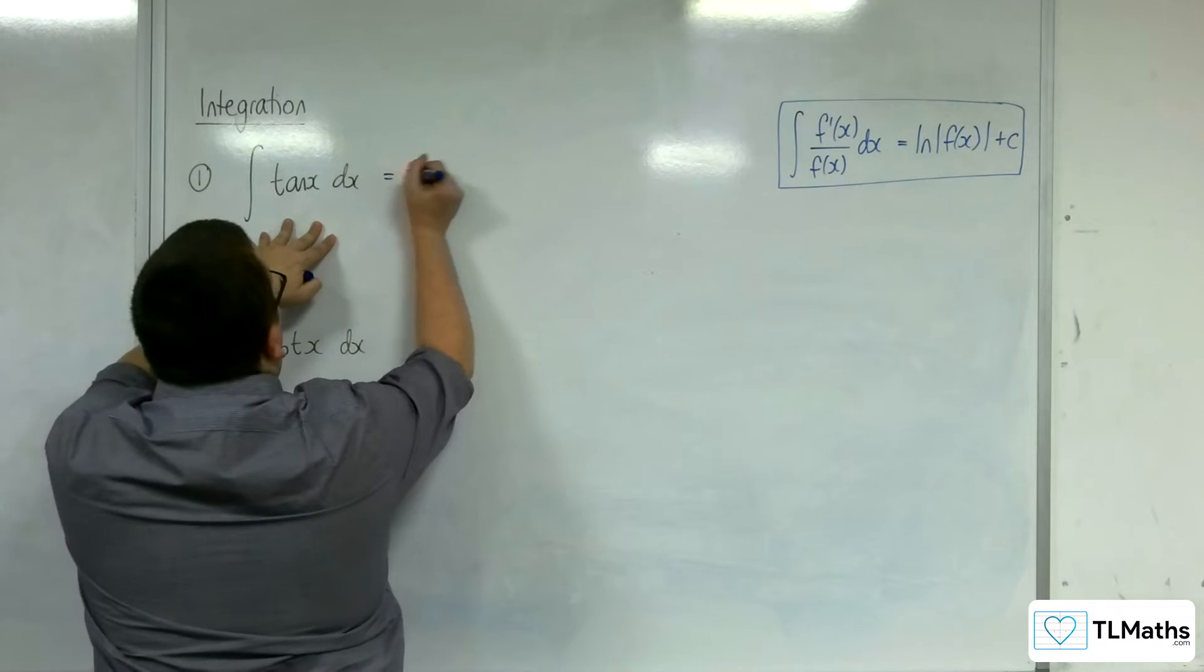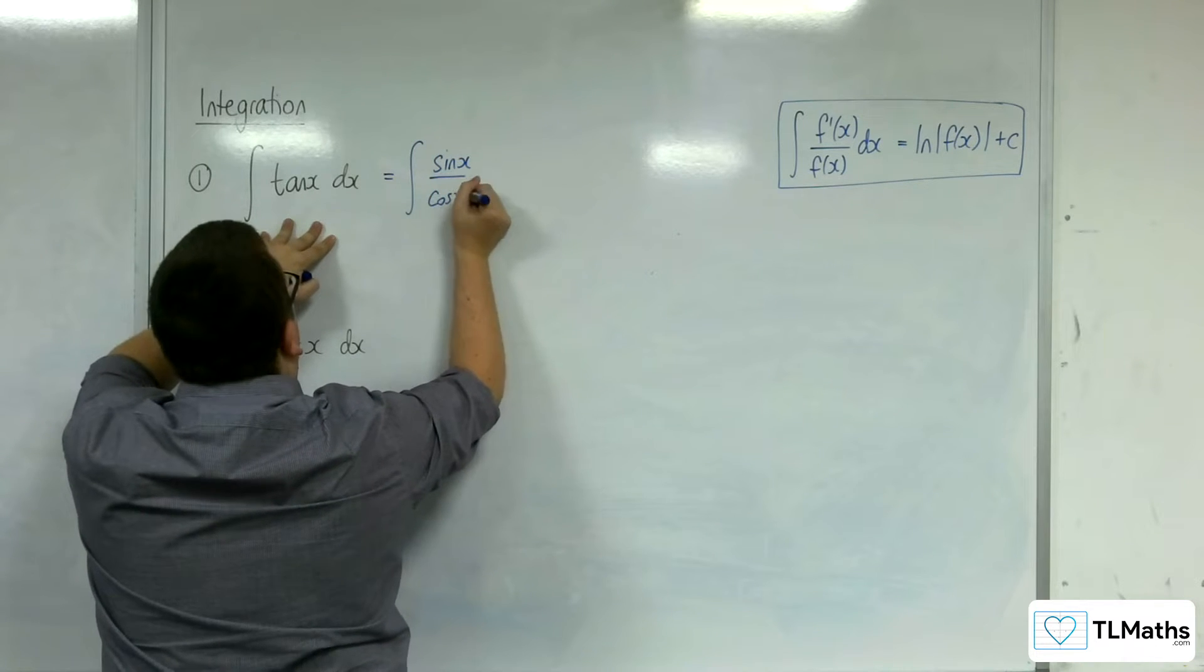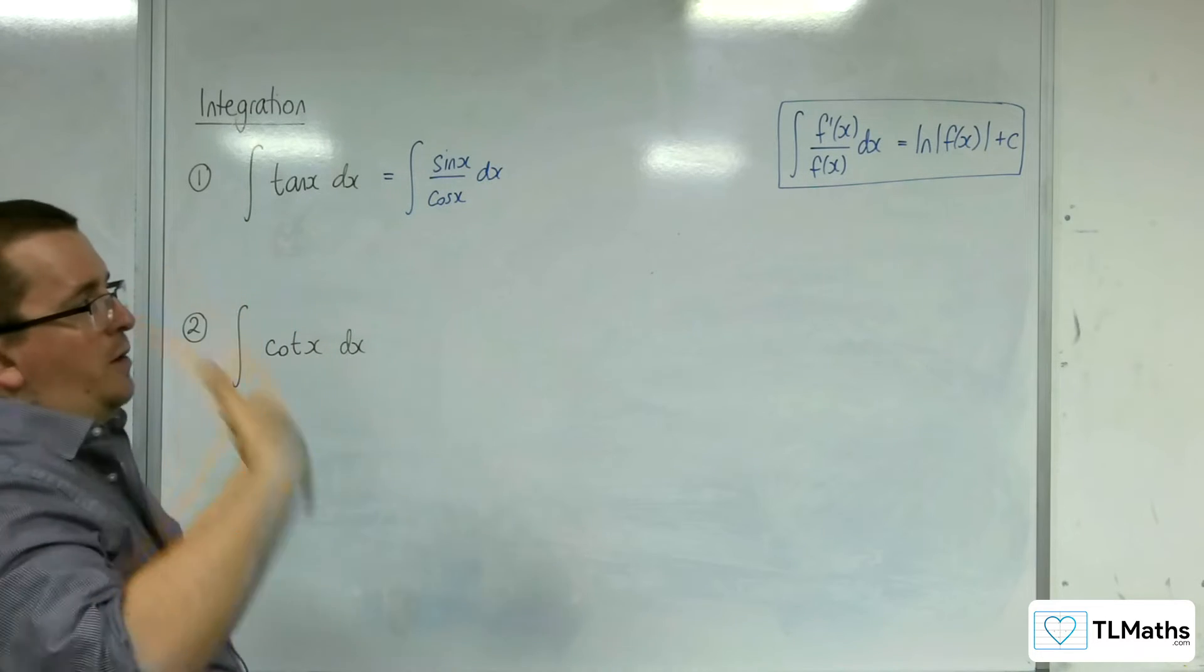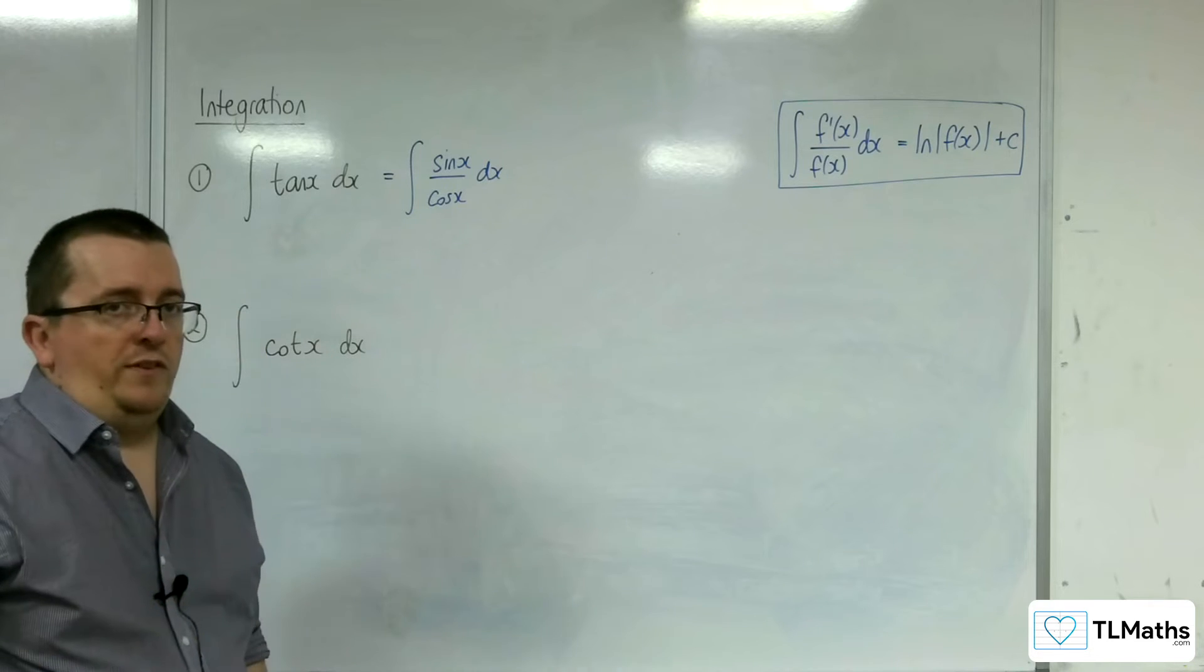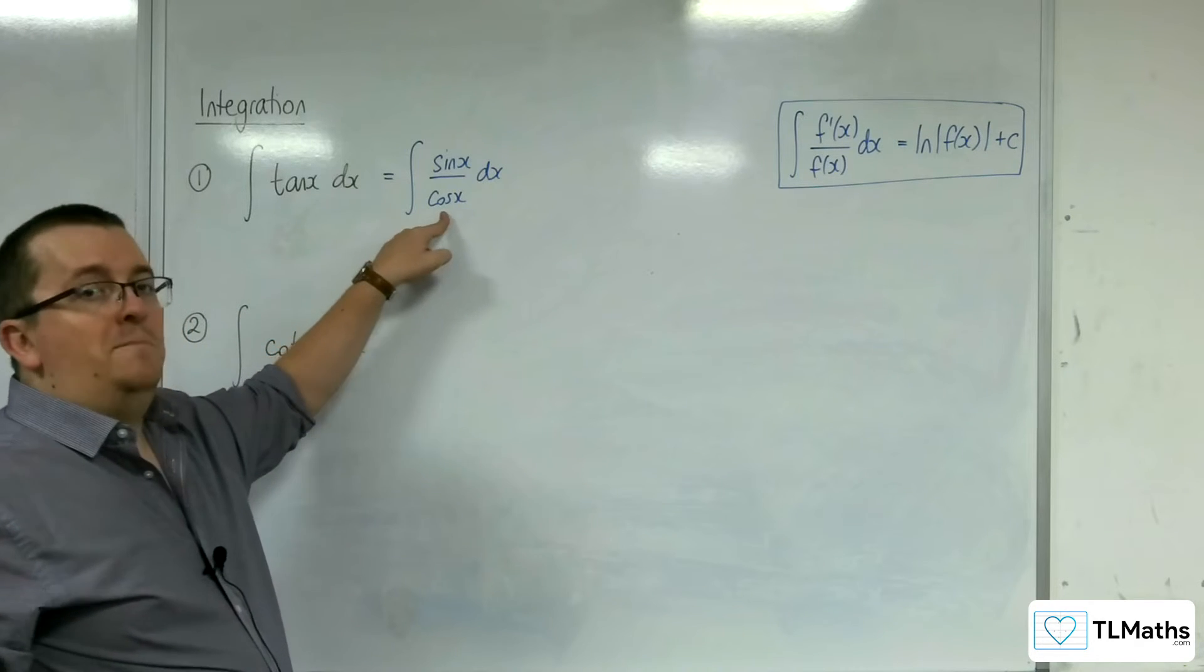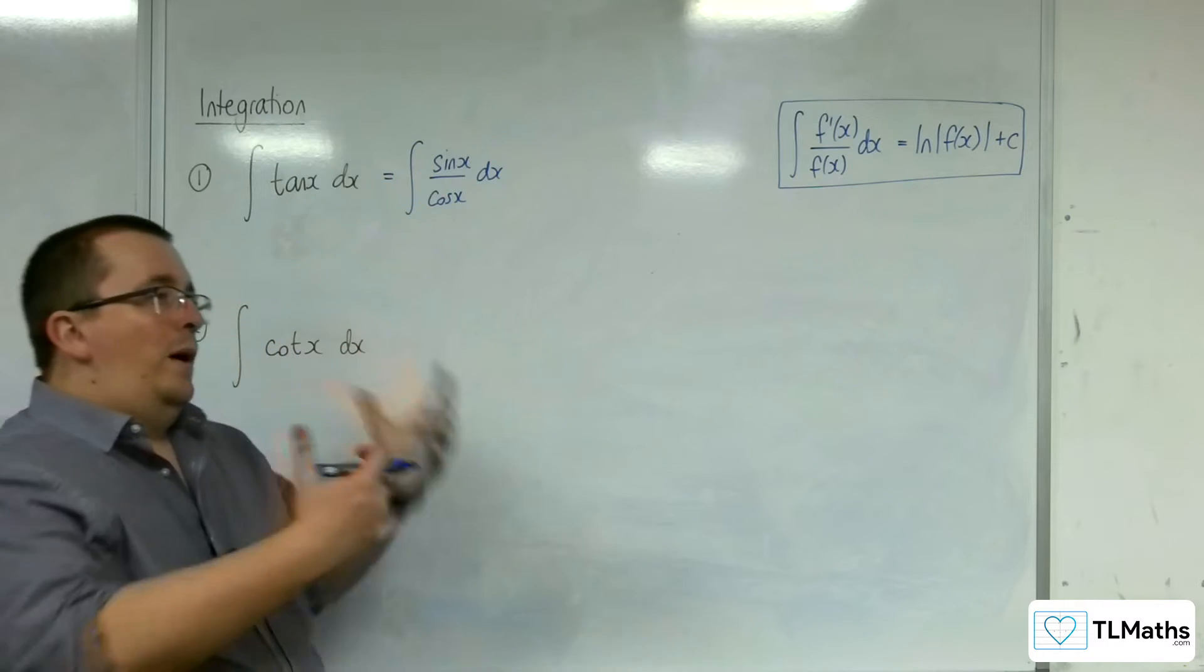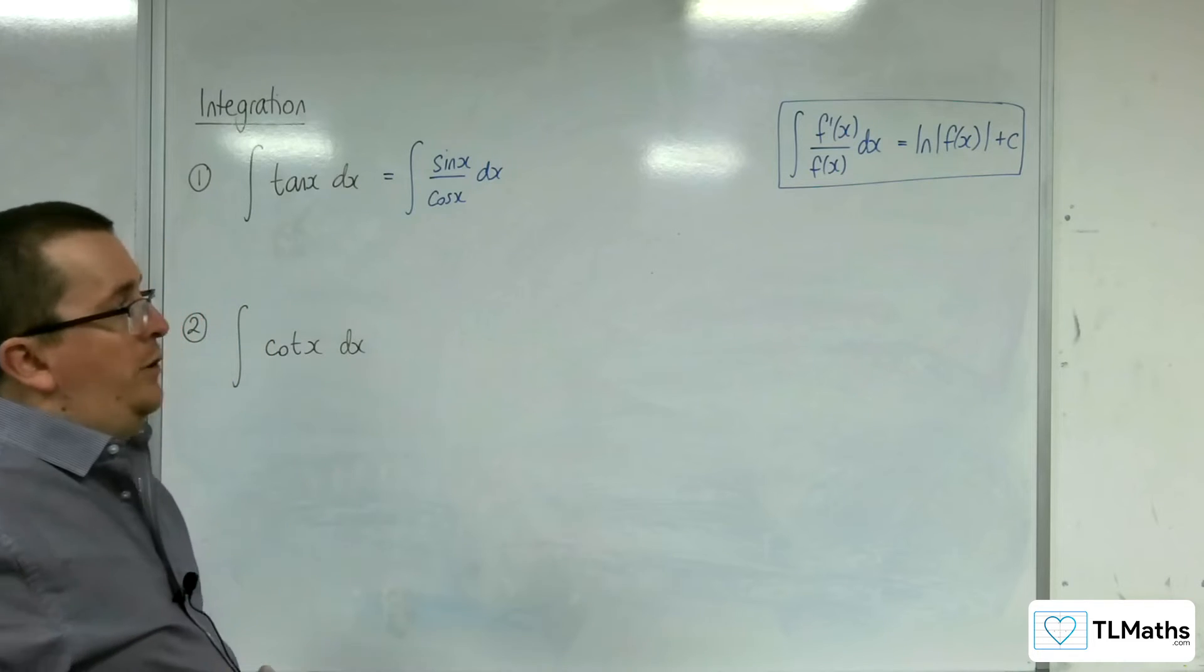So tan x we know to be sin x over cos x. So in order to use our rule, the denominator would have to differentiate to the numerator. Now, cos x differentiates to minus sin x, so not sin x. However, it is a multiple of the numerator, so we can still use this rule.